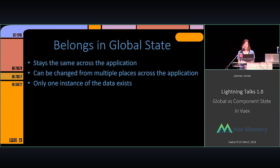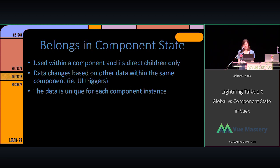Some general tips: it really comes down to instances. Data belongs in the global state if only one instance of it exists, if it can be changed from multiple places across the application, and if consistency matters — it's your single source of truth. For component state: if data is used within a component and its direct children only, component state is fine. You don't want to clog up your store with stuff it doesn't need. And the biggest thing: if the data needs to be unique for each component instance, it definitely belongs in component state.